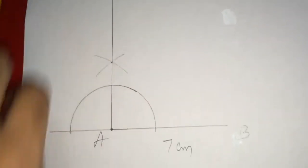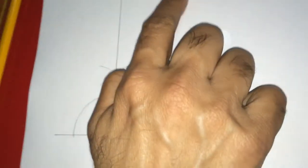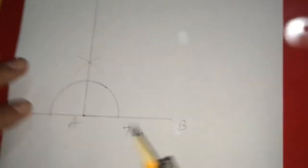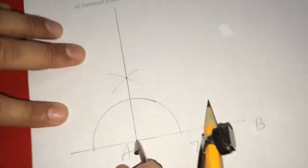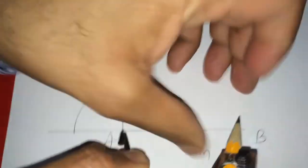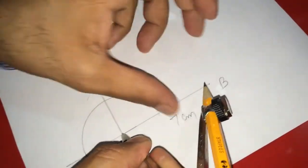So, since the square has length 7 centimeters, all the four sides must be equal. So, first, I am taking A as center and I am taking this AB as radius. So, AB is 7 centimeters.